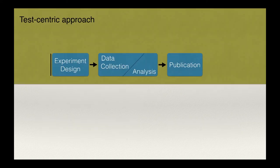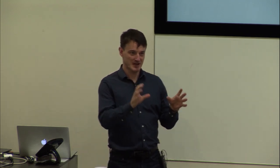What problem are we trying to solve in the lab? This is how a typical lab is organized. You start with an experiment design, think of a hypothesis, design the experiment, and spend time collecting data. Students are fairly segregated — they collect their own data, learn from each other, run their project, organize their data, run their analysis, and work toward publication.